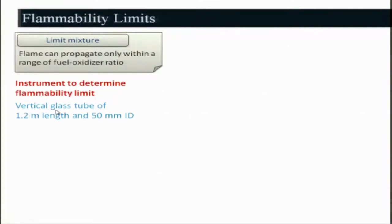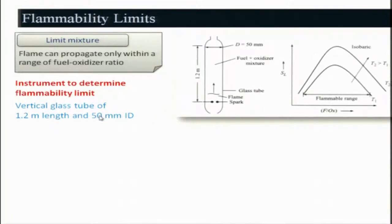How to determine the flammability limit experimentally is a very important question. Generally, people use a vertical glass tube of 1.2 meter length and 50 mm internal diameter. This is the American standard used across the globe. If you use a smaller diameter, there will be significant heat losses, and you would not get the right properties related to flammability limits. The 50 mm diameter is chosen so that the problem of heat losses is avoided.